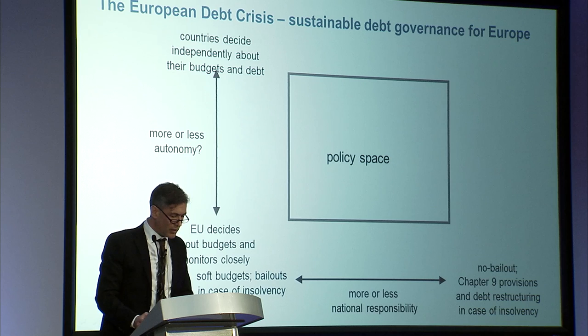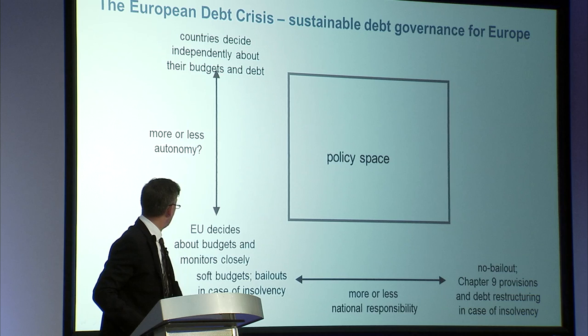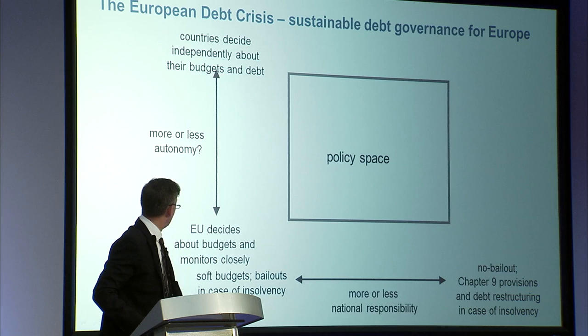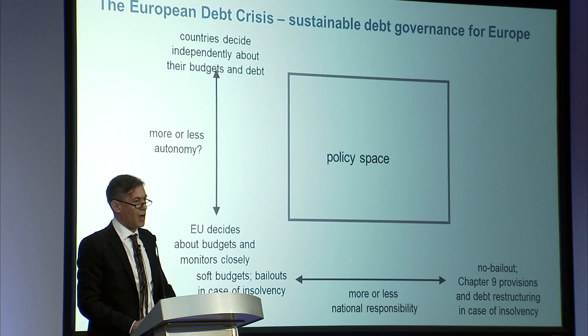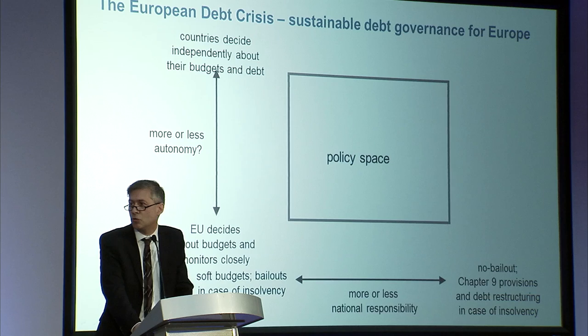One can sort fiscal constitutions along two dimensions. One dimension is how autonomous are the countries when they make their borrowing decisions. The other dimension is how responsible are they going to be about the debt they have chosen. This creates a policy space, and any financial constitution you have can be placed into this square.